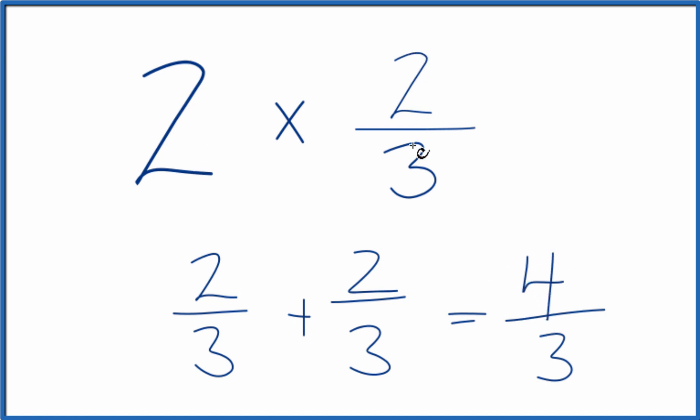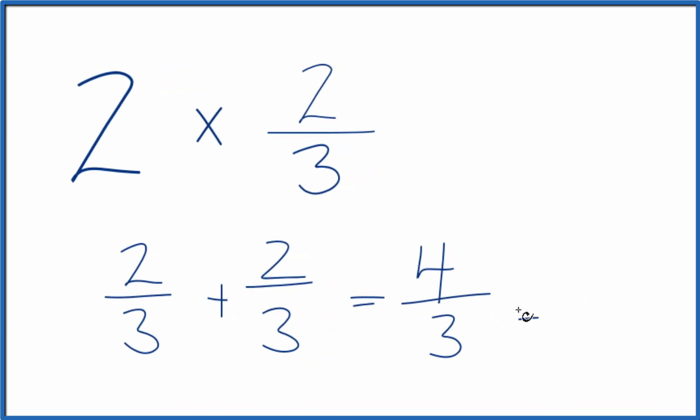So two times two-thirds, that equals four-thirds. This is an improper fraction, so if you wanted to make this into a mixed number, three goes into four one time with one left over. Bring the three across, and you could call it one and one-third.